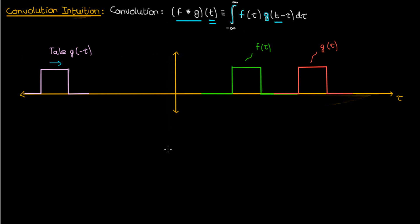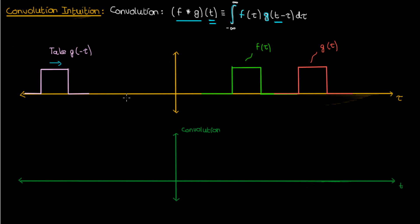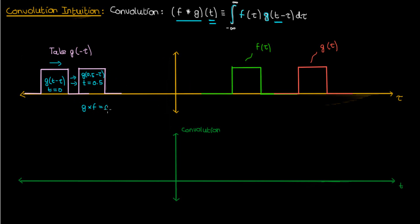Let me show you what we'll get as we take the convolution of f and g. As we start sweeping g of negative tau — essentially the same as sweeping g of t minus tau — as t increases our function g will move more and more to the right. For instance when t equals 0.5, we might be at g of 0.5 minus tau. If g of 0.5 minus tau is all the way back, when we multiply g and f at this time point we'll get 0, because the non-zero part of g is hovering over the zero part of f.